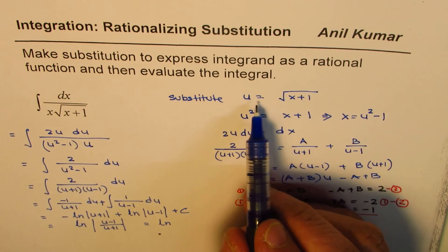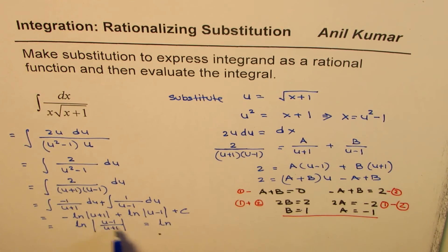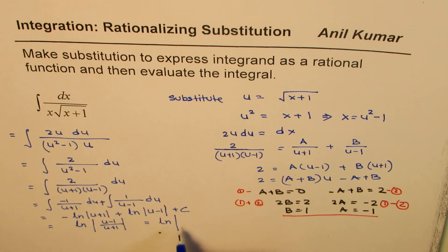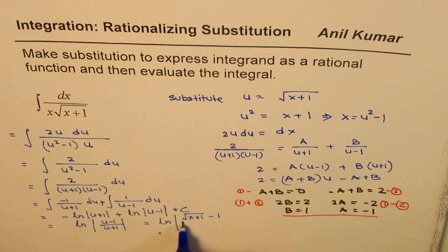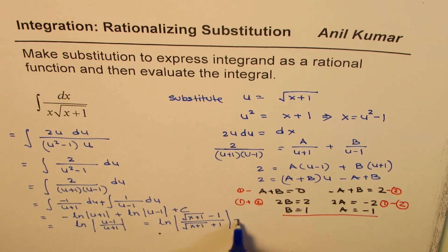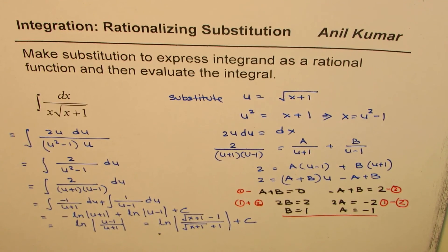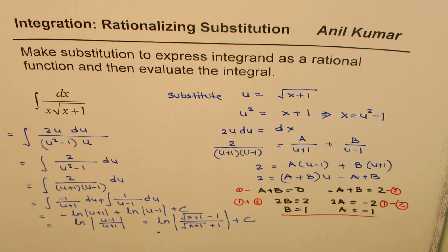We'll substitute u back with square root of x plus 1. So we have ln absolute value of square root of x plus 1 minus 1 divided by square root of x plus 1 plus 1 plus c. So that becomes the solution of the given question. I hope that helps. Thank you and all the best.